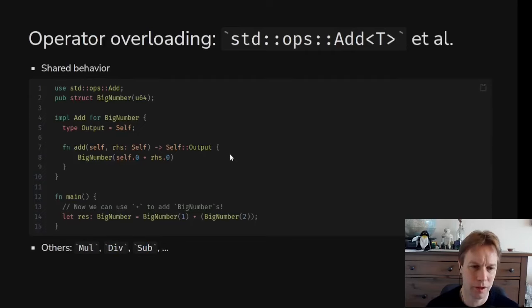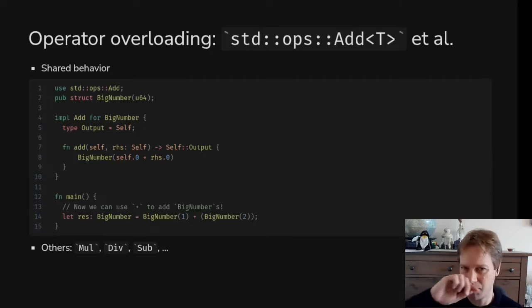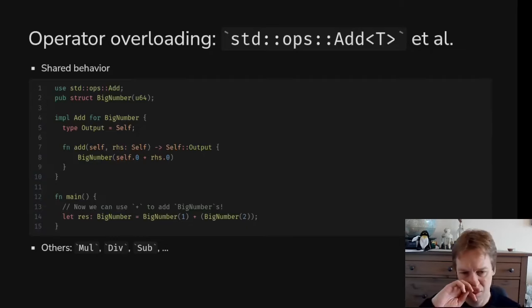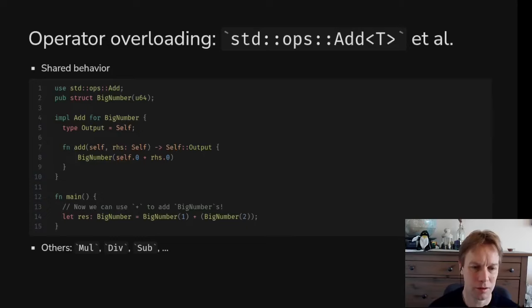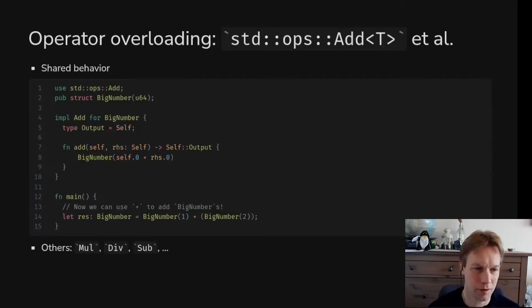There are also traits for doing plus-equals and stuff like that — I think AddAssign and similar — for allowing you to do plus-equals. Remember, you can't make up your own operators. So there's this fixed list of traits that give you this magic behavior of being able to provide your own versions of operators for your types. And as I just said, you can add two things that are different from each other by doing impl Add and then angle bracket the right-hand side type.